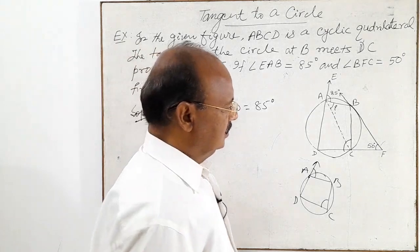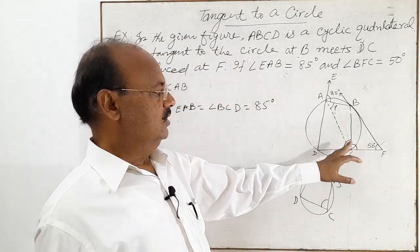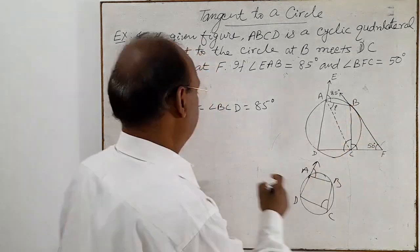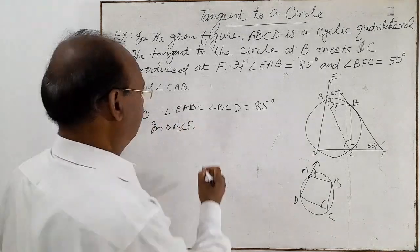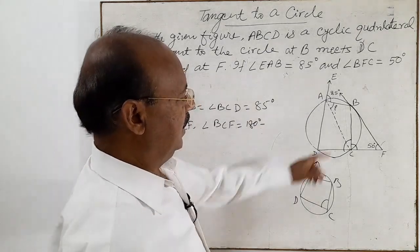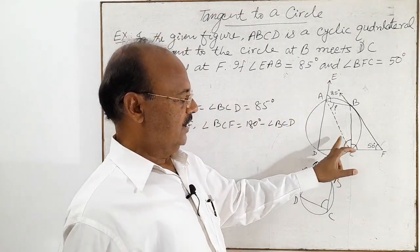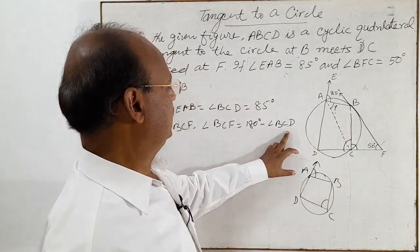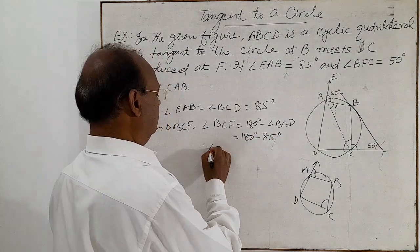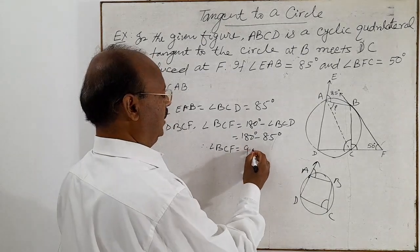Now let us find angle BCF. The sum of angles BCF and BCD is 180 degrees because they are a pair of linear angles. So angle BCF equals 180 degrees minus angle BCD, which is 180 minus 85 degrees. Therefore angle BCF is equal to 95 degrees.